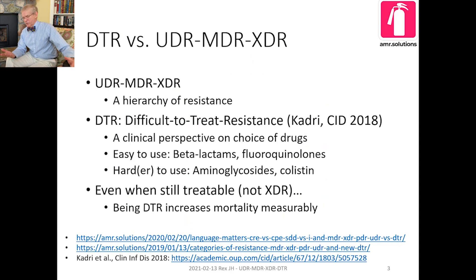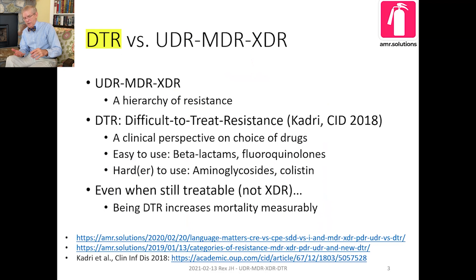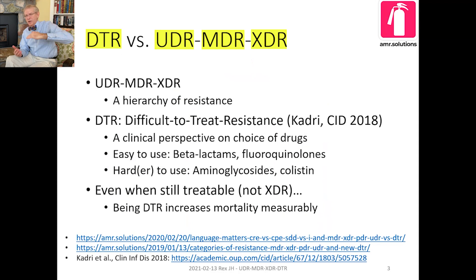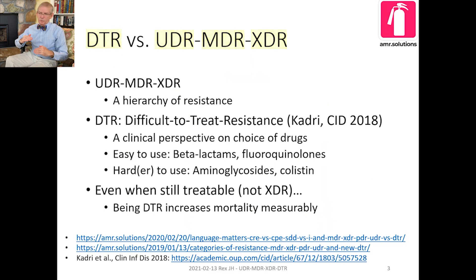So there you have it: a series of acronyms. DTR has to do with the quality and ease of use of the drugs. And then UDR, MDR, and XDR represent different levels along the continuum of resistance. As things become more resistant, it's harder to do a clinical study because it's harder to choose a comparator, and also because MDR and XDR pathogens are harder to treat.